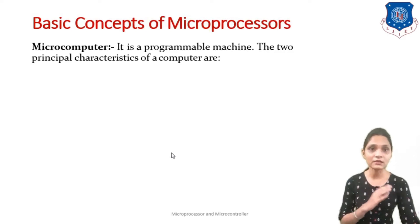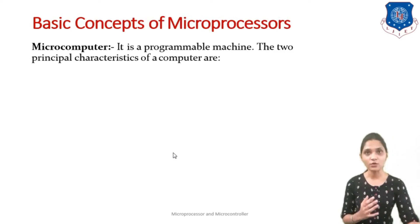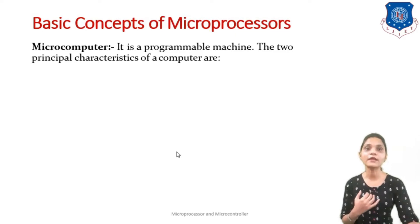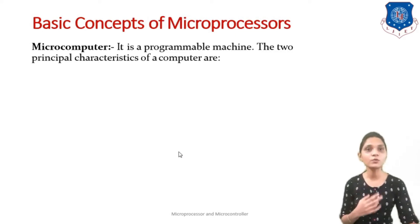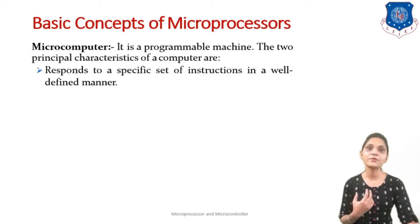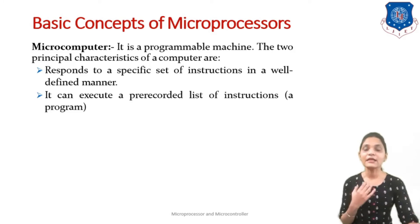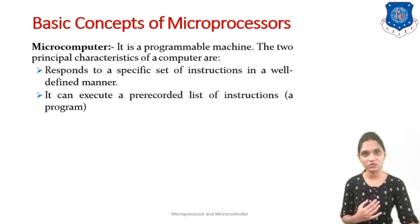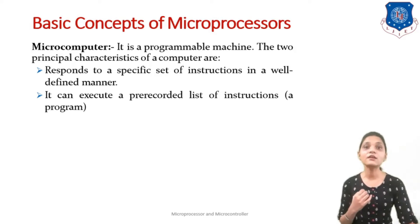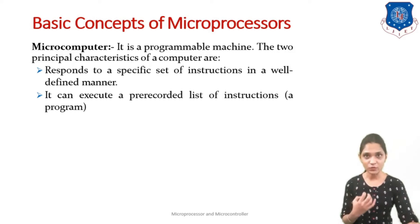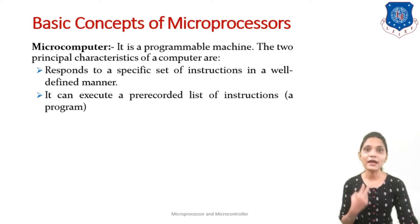We can define a microcomputer as a programmable machine that has two principal characteristics. First, it responds to a specific set of instructions in a well-defined manner. Second, it can execute a pre-recorded list of instructions. So it has a specific instruction set and it can execute those pre-recorded instructions in a specific sequence.